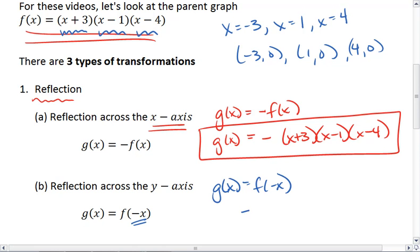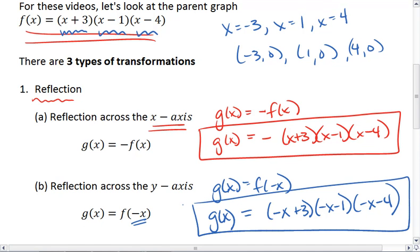And the way it appears in the equation is that in front of every x, we now put a negative sign. Or if there was already a negative sign, we would make that positive. So there's our new function G(x).